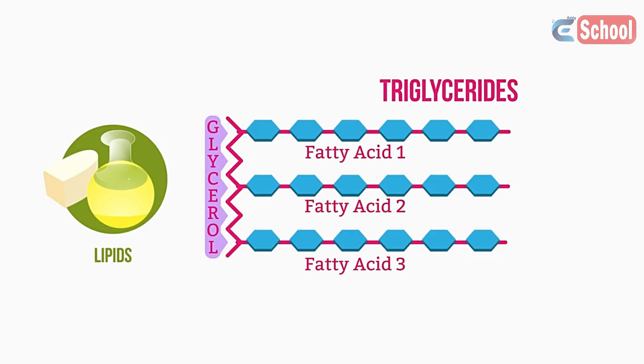Triglycerides are a form of dietary fat found in meats, dairy, and cooking oils. The liver also makes triglycerides. They are used by cells and tissue for energy or otherwise stored as fat.